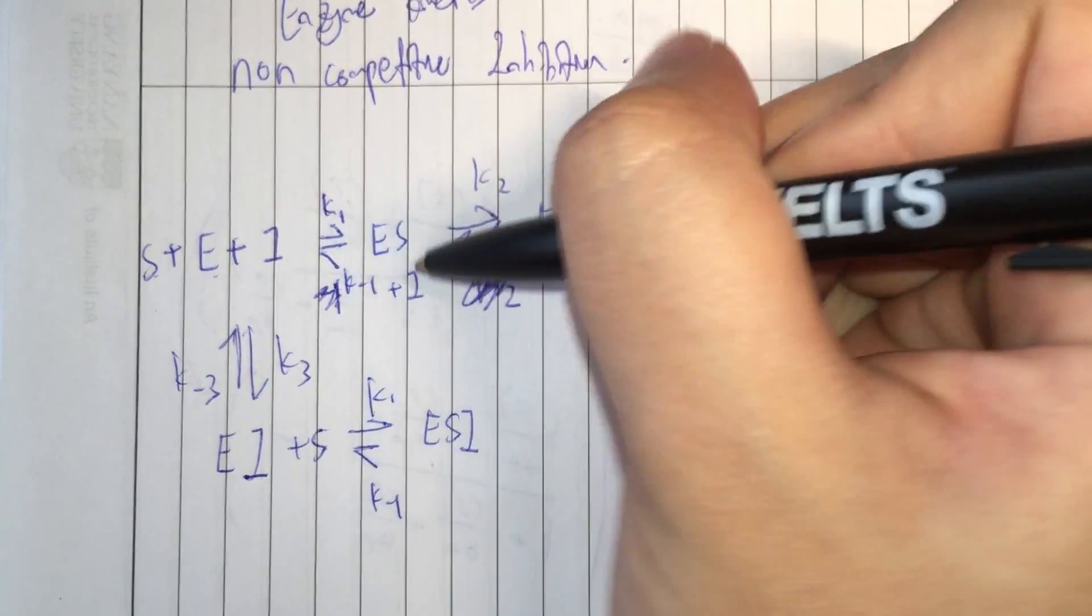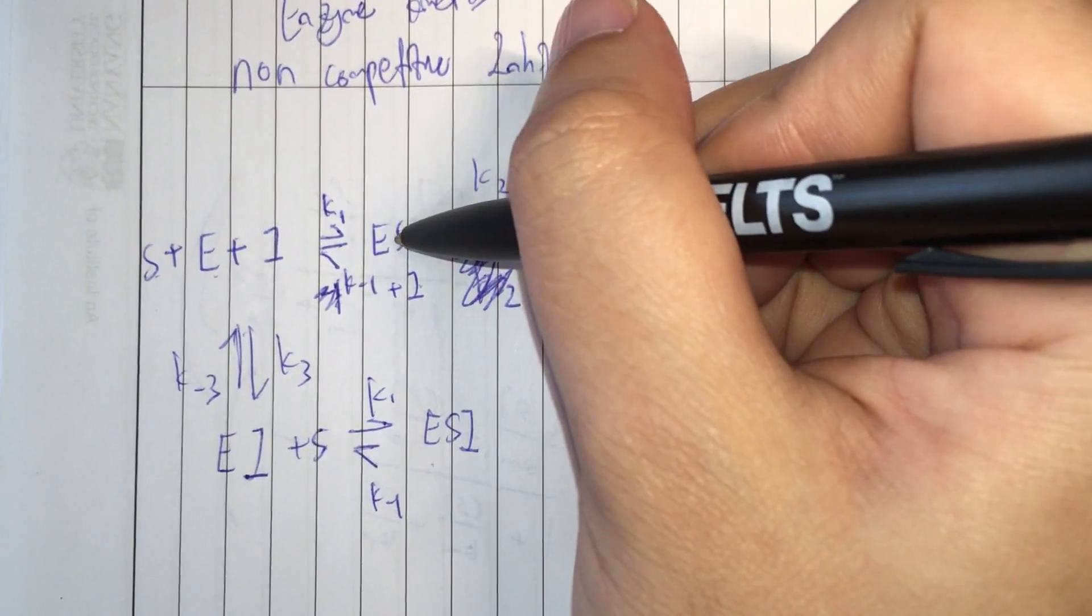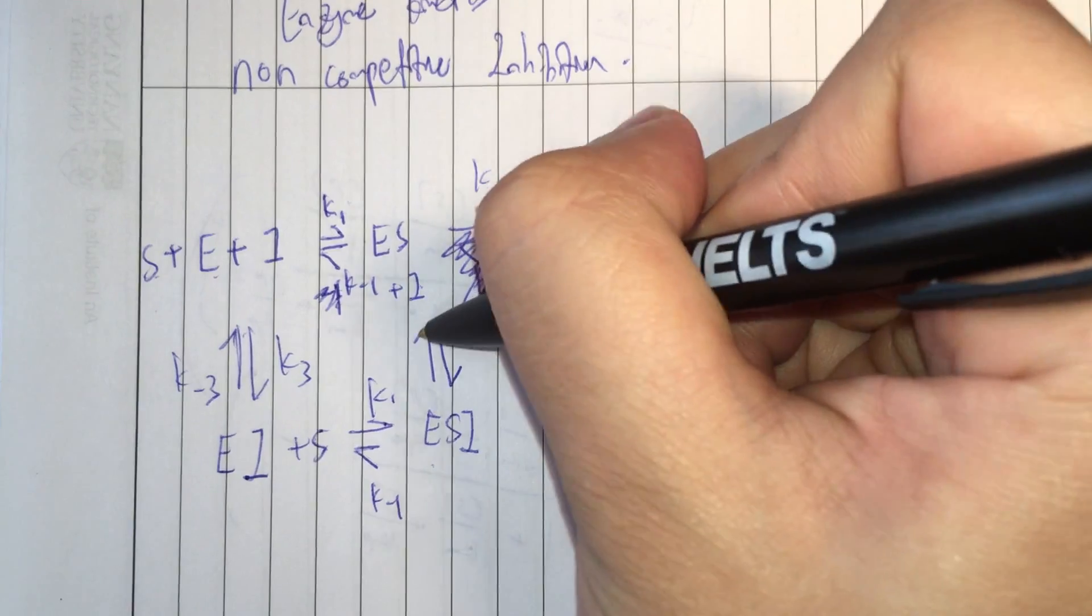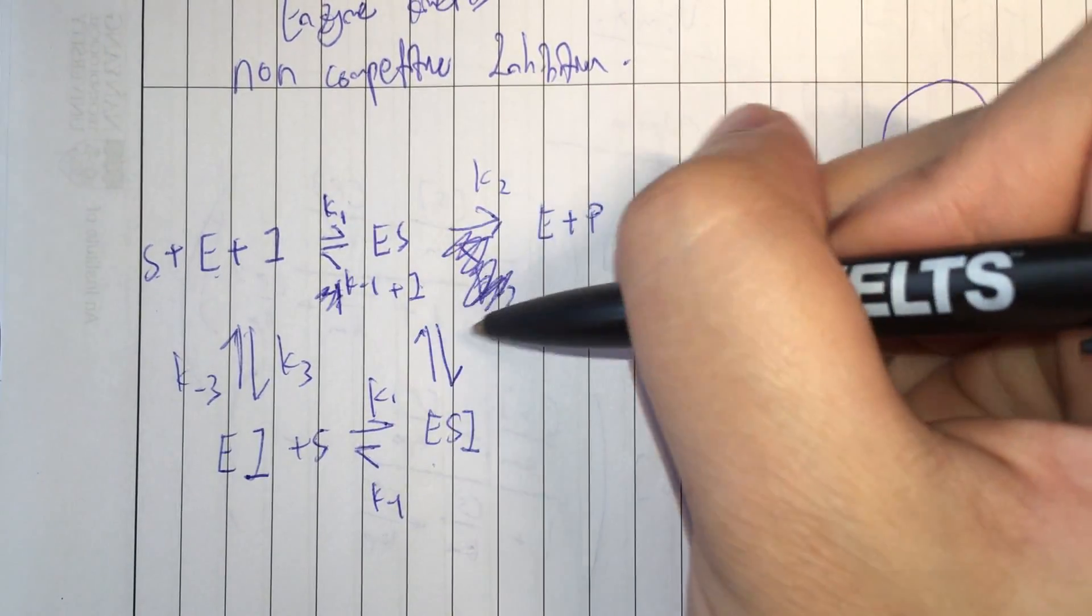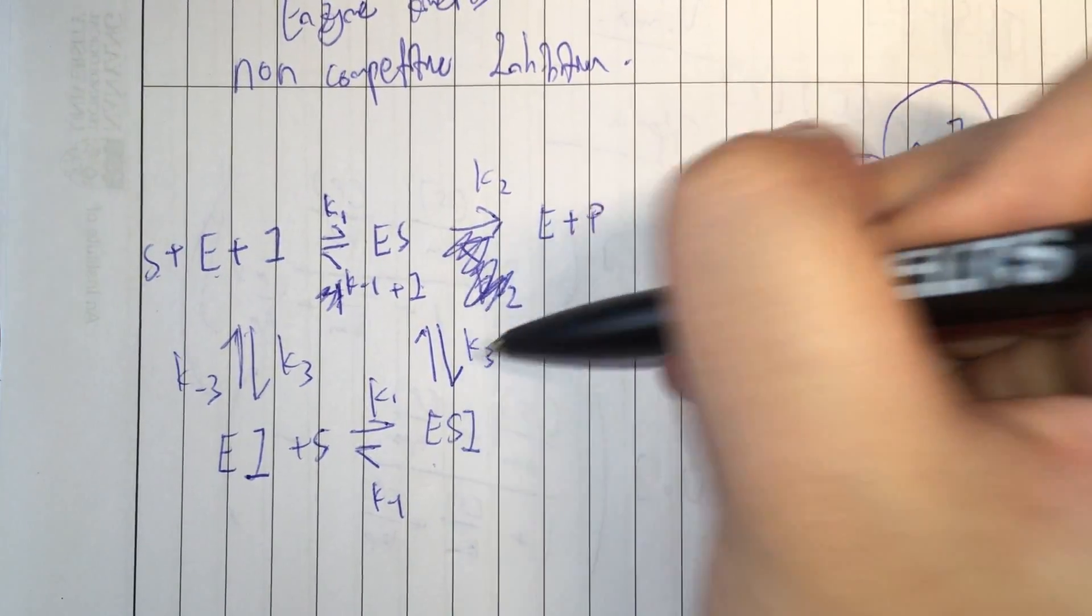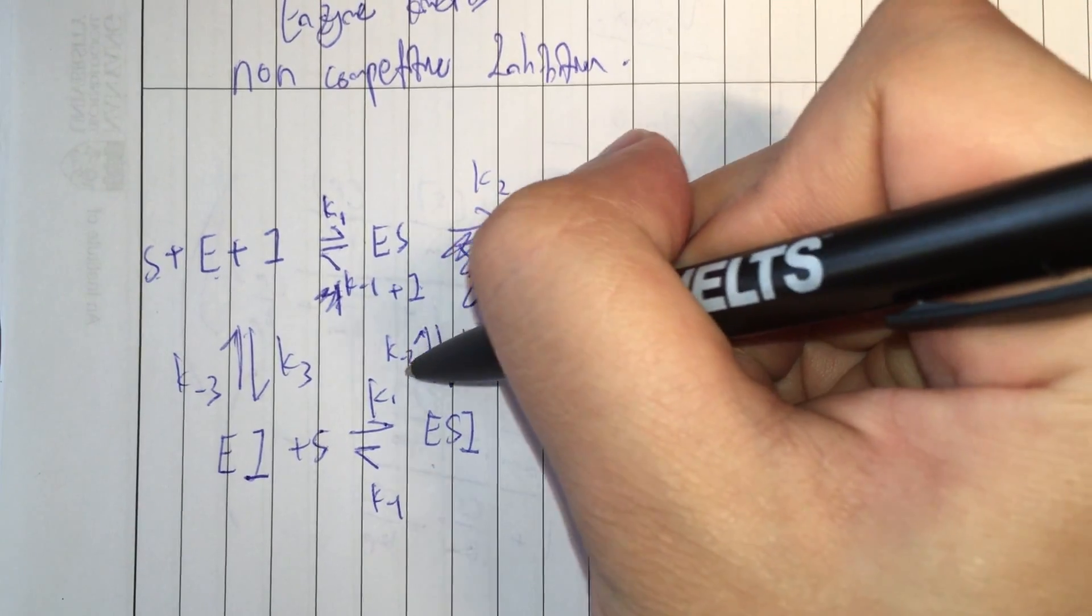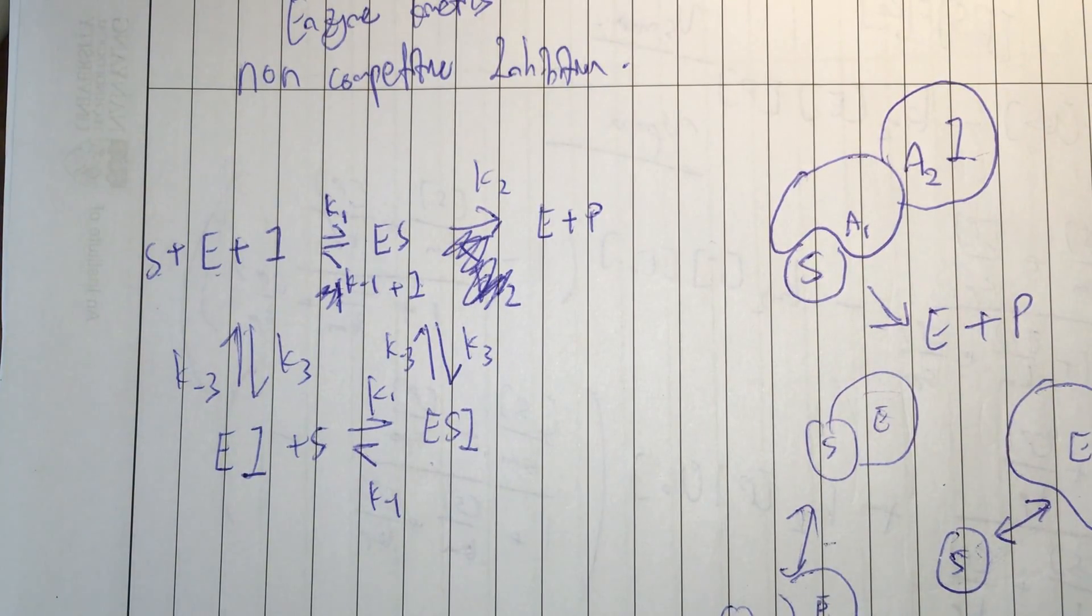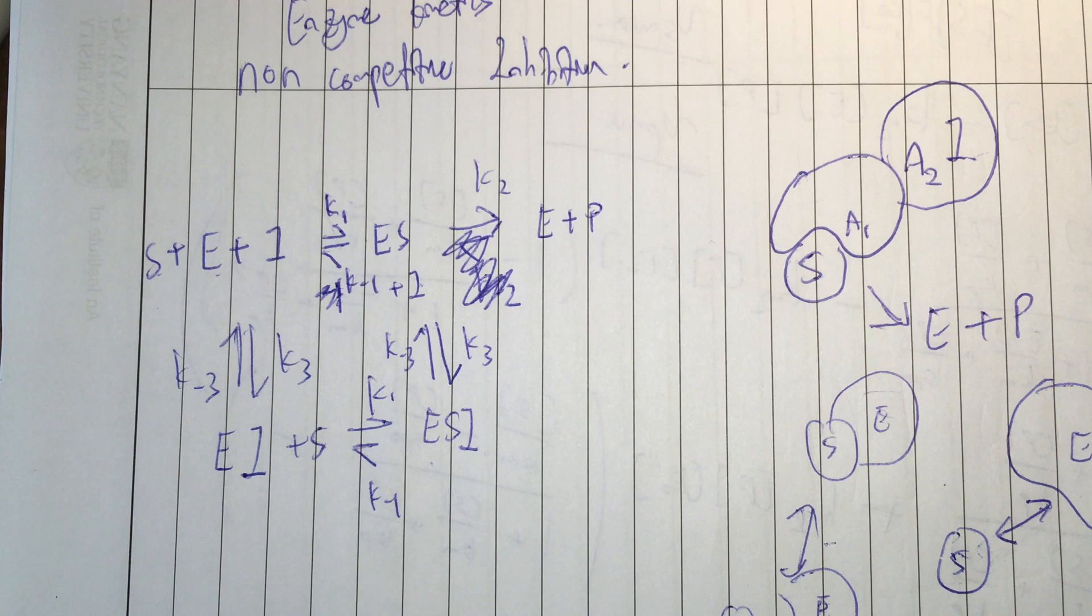And of course, the inhibitor can still bind to the ES complex. So, we'll have the forward and backward rate again. And we'll have K3 forward, K minus 3 backward. And these are the basic groundwork for the enzyme substrate inhibitor kinetics for the non-competitive inhibition case.